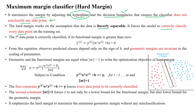It forces the model to correctly classify every data point in the given training dataset. In this plot, all the data points are correctly classified — there is no single misclassification. So in this kind of dataset, the data is linearly separable. If the dataset is linearly separable, we can use the Hard Margin SVM classifier.